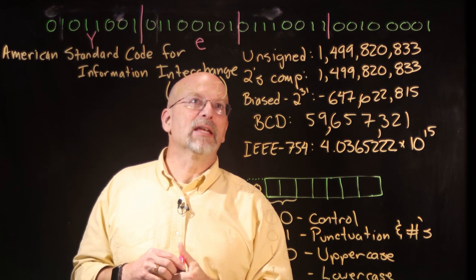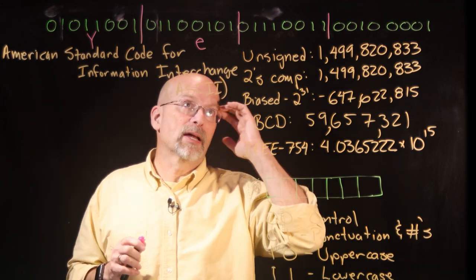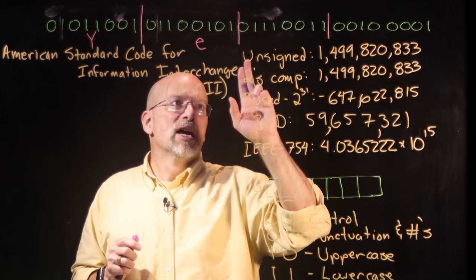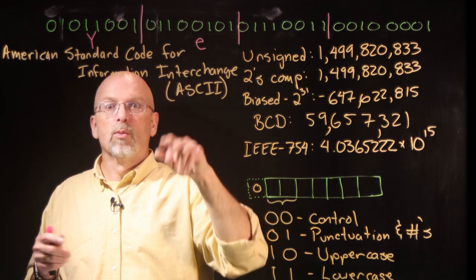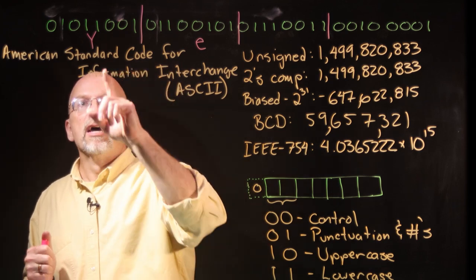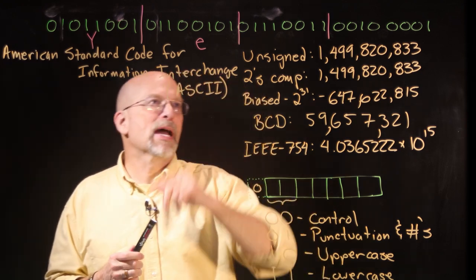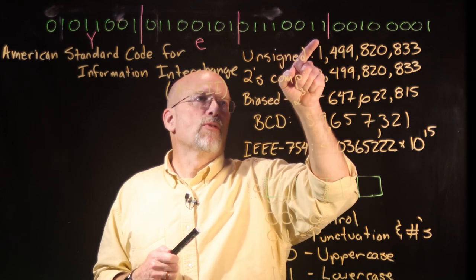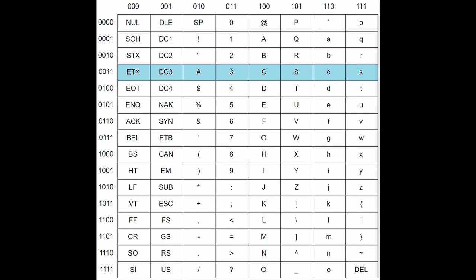The next byte is 0, 1, 1, 1, 0, 0, 1, 1. And in fact, we can go back and talk about the most significant 2 bits. The most significant 2 bits of those 7 bits are 1, 1. So we know this is going to be a lowercase letter. The last 4 bits are 0, 0, 1, 1. We go down the row and then go across until we find the column identified by the most significant 3 bits, 1, 1, 1. That gives us the last column where we see a lowercase s.